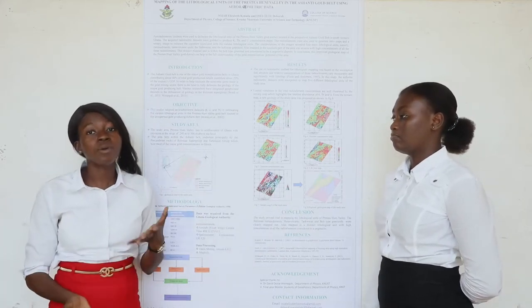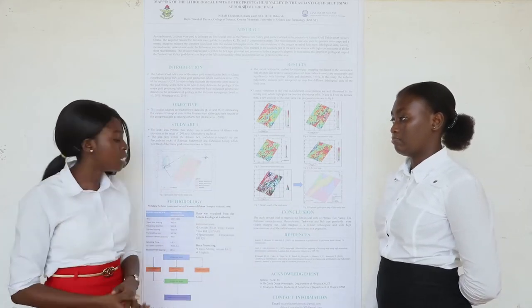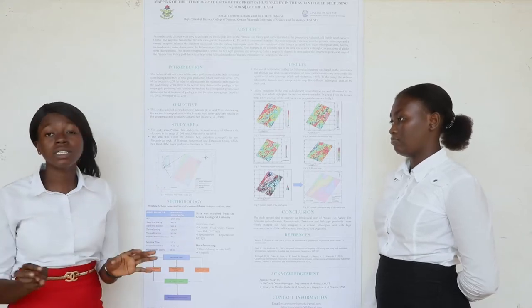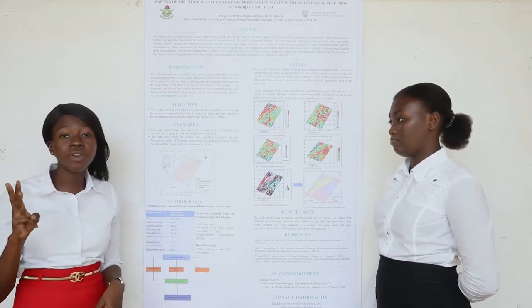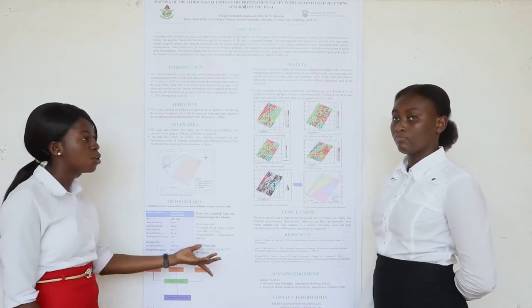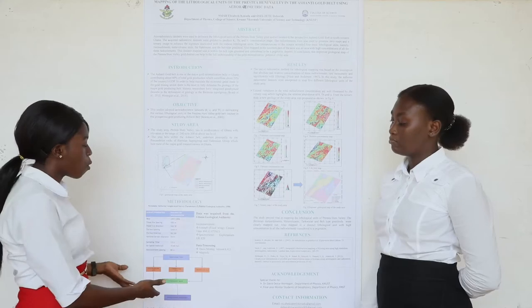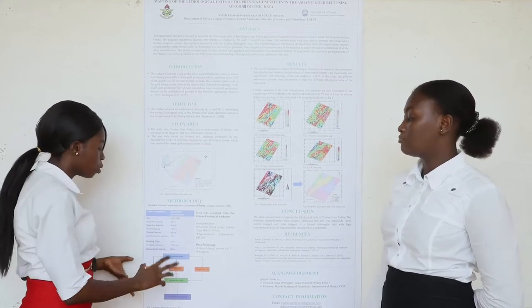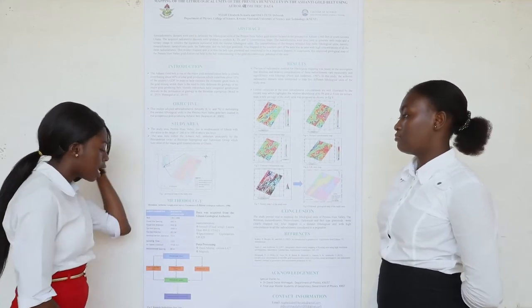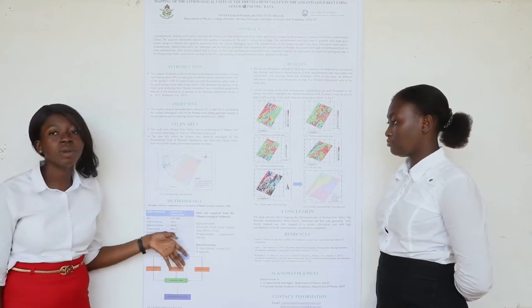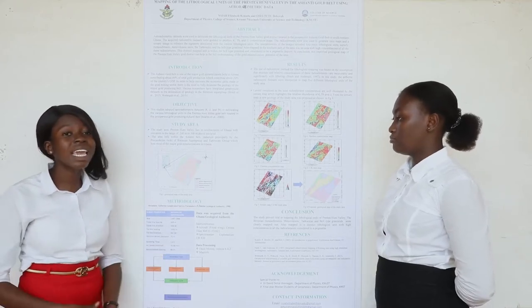We use aeroradiometric data, centering on three radio elements: potassium, thorium, and uranium. From the total count of these radio elements, we process them into a ternary map, and from the ternary map we interpret them to get our new geological map.